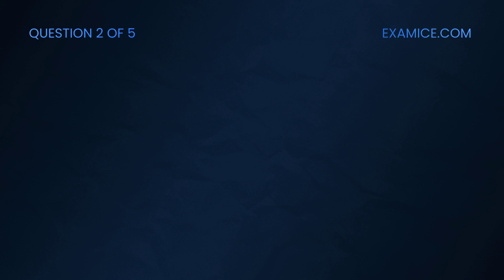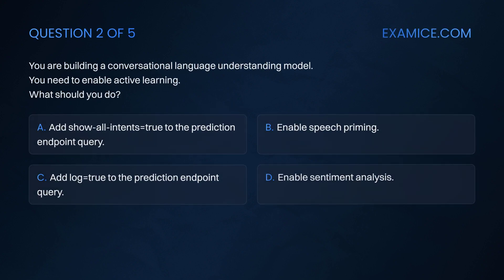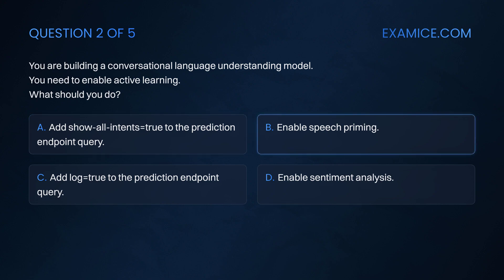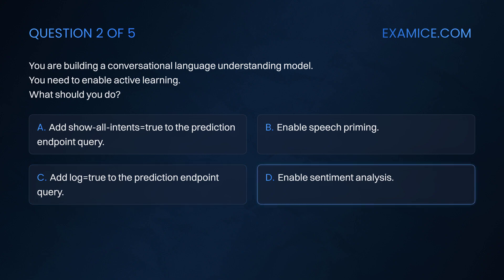Question 2. You are building a conversational language understanding model. You need to enable active learning. What should you do? Option A: Add show-all-intents equals true to the prediction endpoint query. Option B: Enable speech priming. Option C: Add log equals true to the prediction endpoint query. Option D: Enable sentiment analysis.